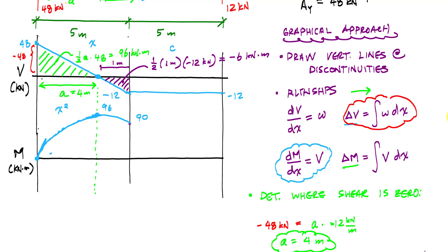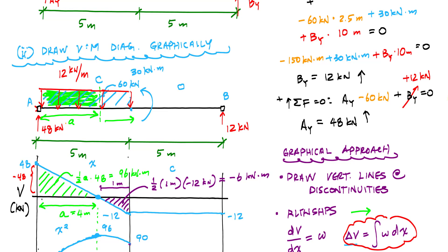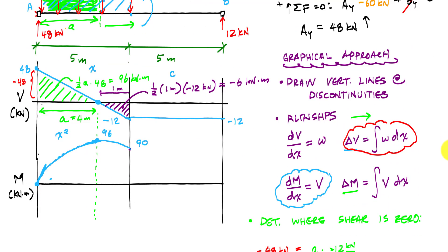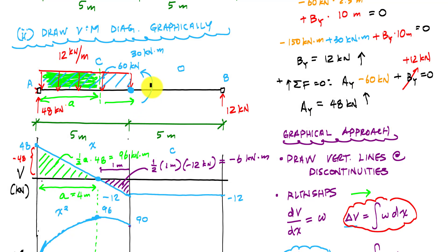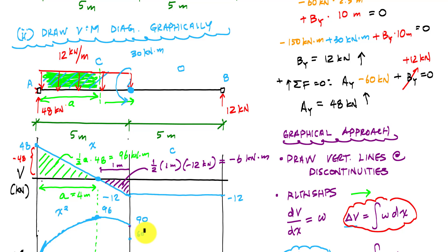Here I reach a concentrated moment of 30 kilonewton-meters. The general rule — if you draw the moment on the left side of the dot with arrows pointing downward — means I'm going to jump down 30 kilonewton-meters, taking me to 60 kilonewton-meters. So I jump down like this because of the concentrated moment.